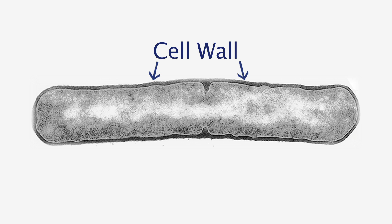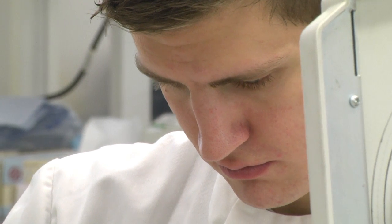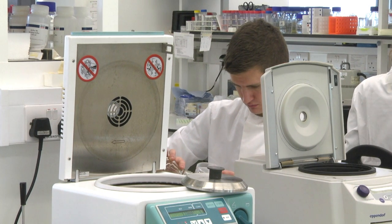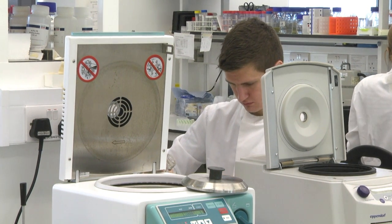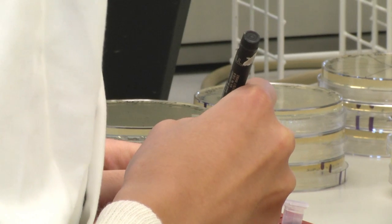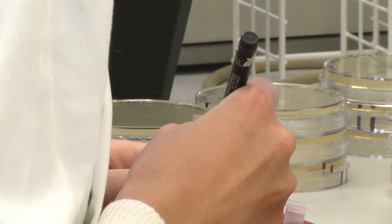One of the questions we've become very interested in recently is how did cells grow and divide before the cell wall was invented. We've approached this by studying very curious variants of bacteria called L-forms, that will grow in a complete absence of cell wall. In previous work we decided to study L-form biology using our favourite experimental organism, Bacillus subtilis.